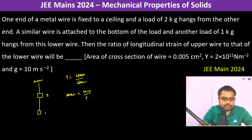The tension in the lower wire is mg, which is 1 times g. The tension in the upper wire is 1g plus 2g, so the tension there is going to be 3g.